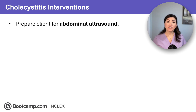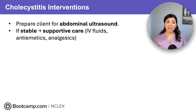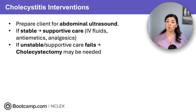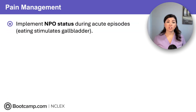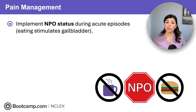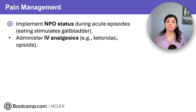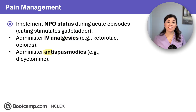For diagnostics, an abdominal ultrasound confirms inflammation or gallstones. If the client is stable, we manage supportively with IV fluids, antiemetics, and analgesics. If the client is unstable or supportive care fails, a cholecystectomy or gallbladder removal may be needed. During acute episodes, keep the client NPO because every bite triggers bile release, which squeezes the angry gallbladder. Anticipate IV analgesics — NSAIDs like ketorolac for mild to moderate pain and opioids for severe pain. Administer antispasmodics like dicyclomine to reduce spasms and relax smooth muscles like those in the gallbladder.